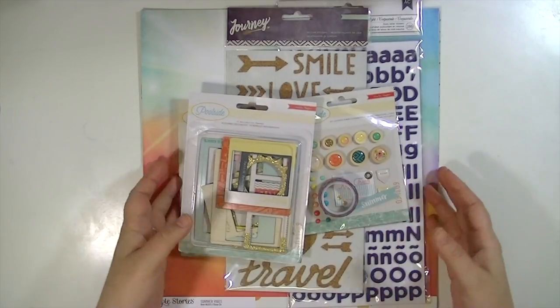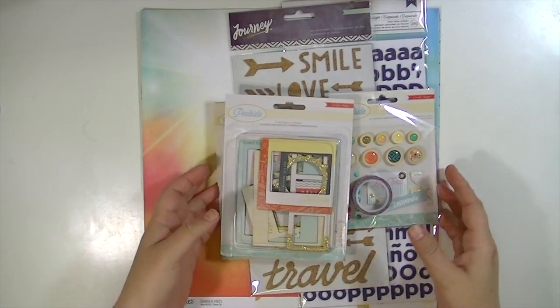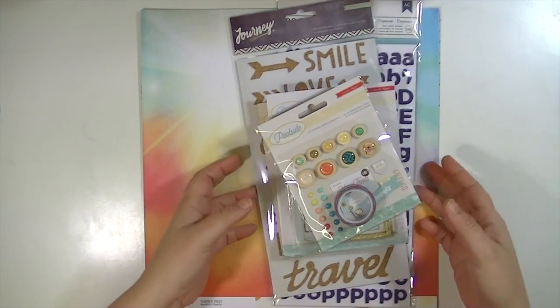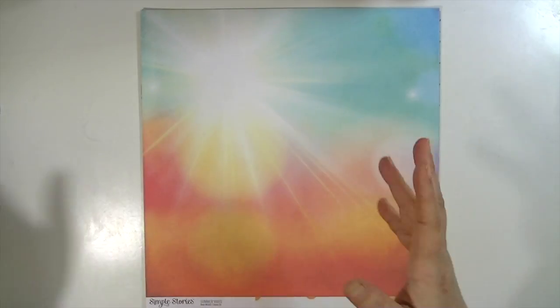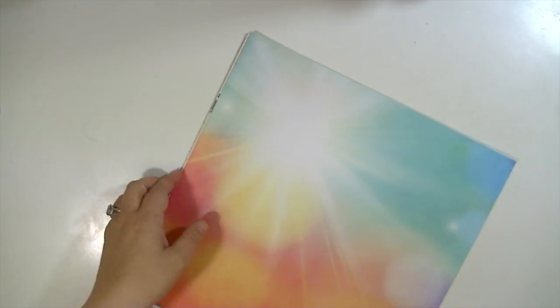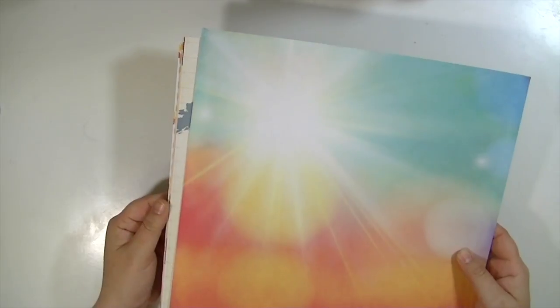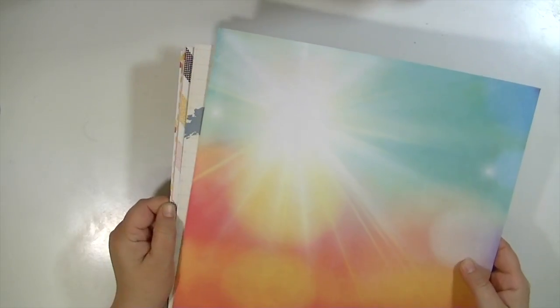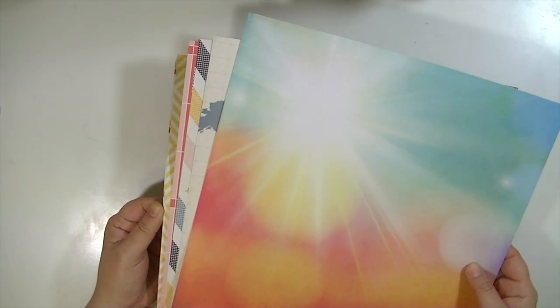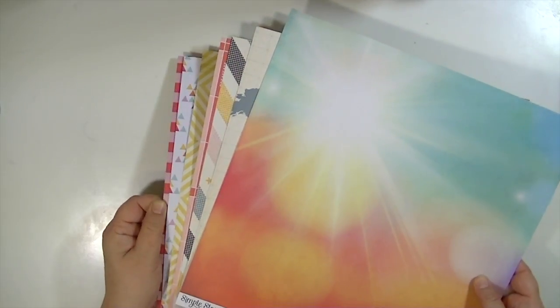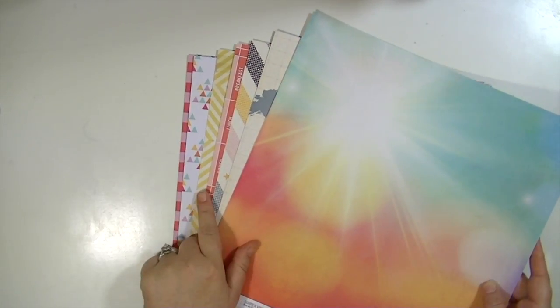I always start with paper first just because I feel like then the embellishments make more sense. One thing I like about the Hip Kit is there's no cardstock in the main kit. You can get a cardstock add-on, but it only comes with patterned papers. I'm going to give you just a little bit of an overview.